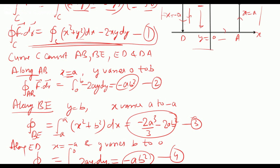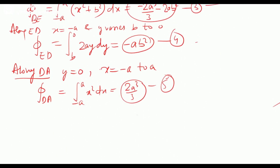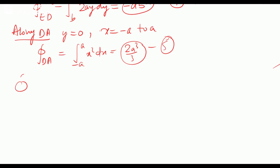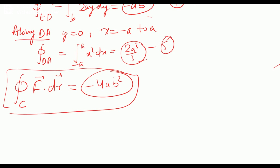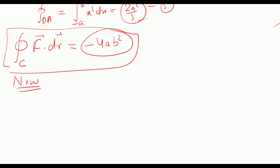The total line integral along curve C is the sum of equations 2, 3, 4, and 5. Adding them all together, the value of the line integral F·dr along curve C is −4ab². Now to verify Stokes' theorem, we find the curl of F.